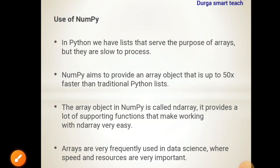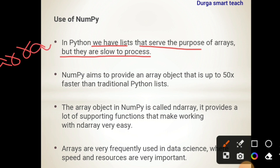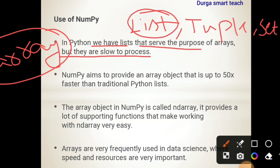Next, let's look at the use of NumPy. In Python we have lists, and lists serve the purpose of arrays, but they are slow to process. An array is a collection of similar data elements. We have list, tuple, and set in Python — all used to store a collection of elements. The difference between arrays and lists is that a list is used to store a heterogeneous collection of elements, whereas an array is used to store only homogeneous elements.